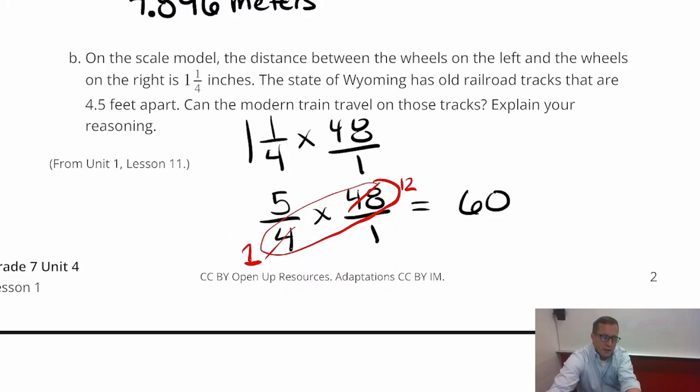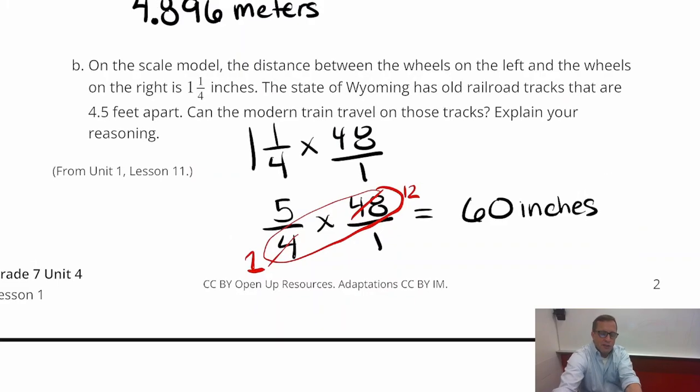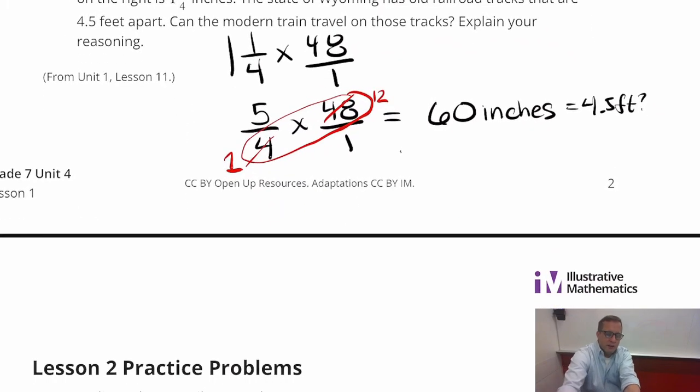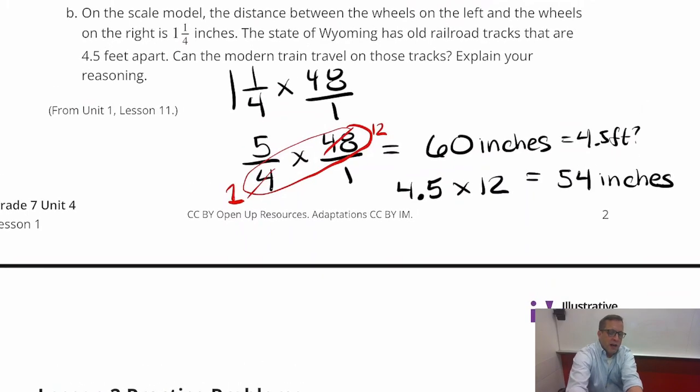Just so you know, that's 60 inches, what we just got there, 60 inches. And does 60 inches equal 4.5 feet? And it doesn't. It doesn't. Because four and a half feet, if we just multiply that by 12, you'll get how many inches that is. Well, four times 12 is 48 plus six is going to be 54. So that equals 54 inches. So this will not fit on the tracks. So it's a big no.